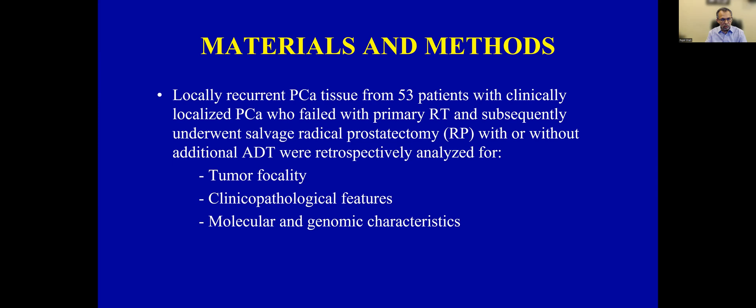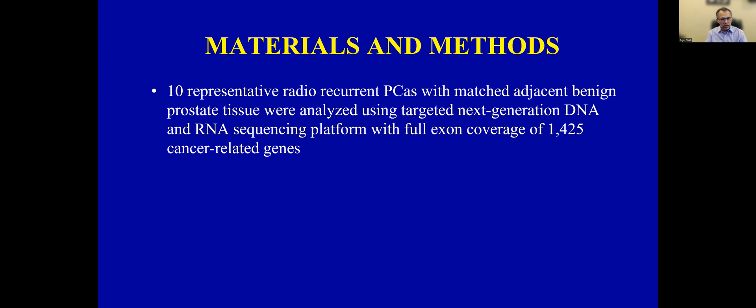We had a very interesting and relatively rare cohort of 53 patients with a diagnosis of clinically localized prostate cancer who failed primary radiation therapy and subsequently underwent salvage radical prostatectomy as an intent to cure, with or without additional androgen deprivation therapy. We analyzed 10 radio-recurrent representative samples with matched adjacent benign prostatic tissue using a targeted next-generation DNA and RNA sequencing platform with full exon coverage of 1,425 cancer-related genes.